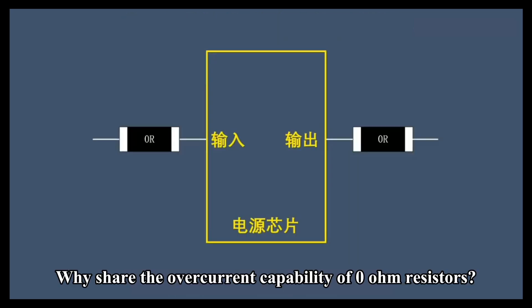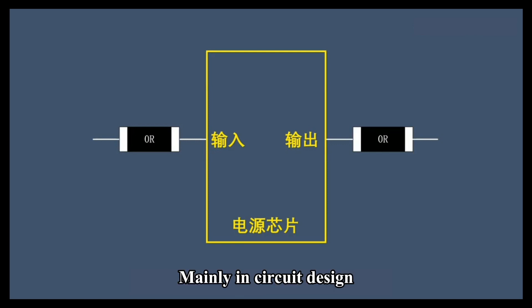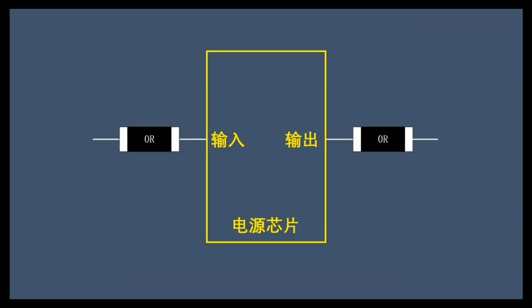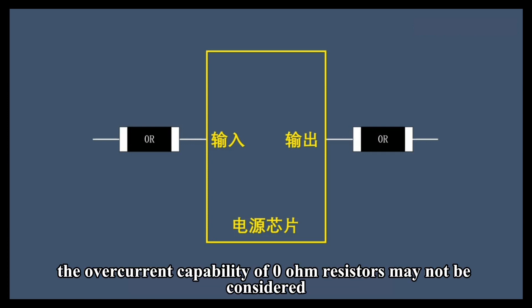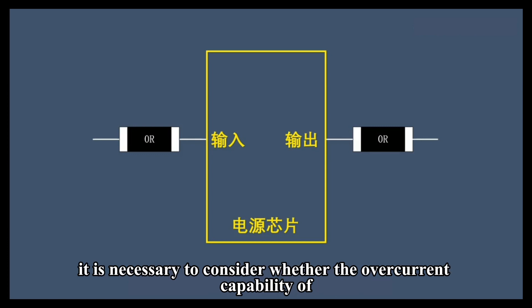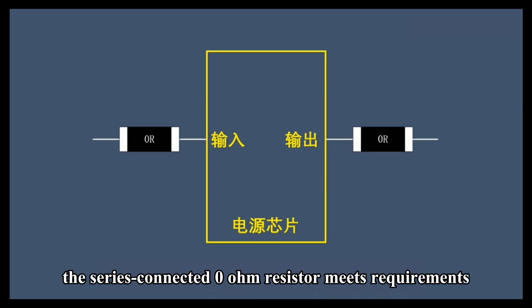Why share the overcurrent capability of zero-ohm resistors? Mainly in circuit design, power chips often connect zero-ohm resistors in series at input or output locations for debugging convenience. When the current is small, the overcurrent capability of zero-ohm resistors may not need to be considered, but when the input or output current of the power chip is relatively large, it is necessary to consider whether the overcurrent capability of the series-connected zero-ohm resistor meets requirements.